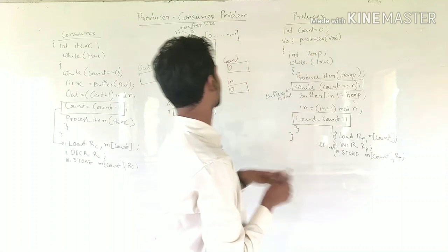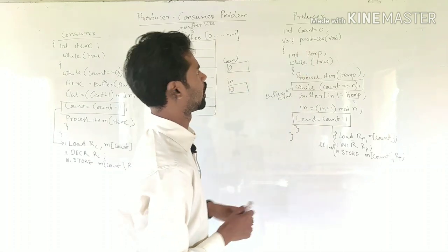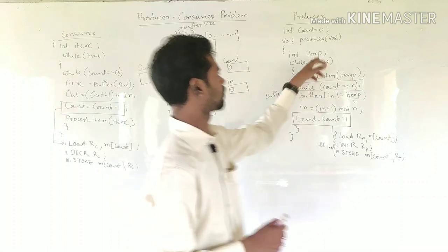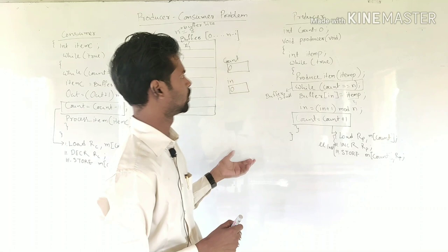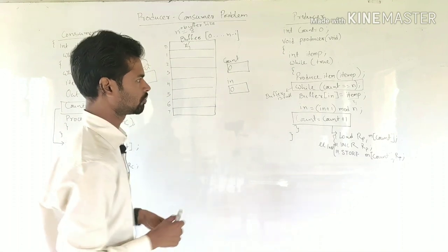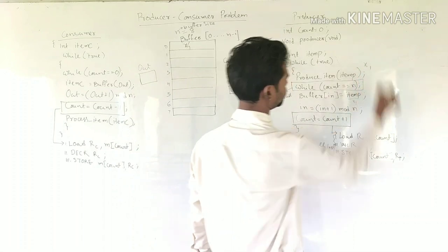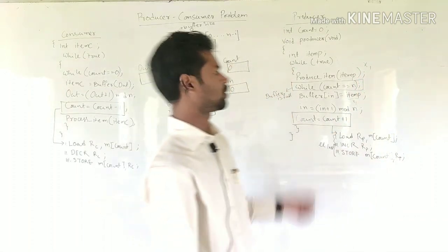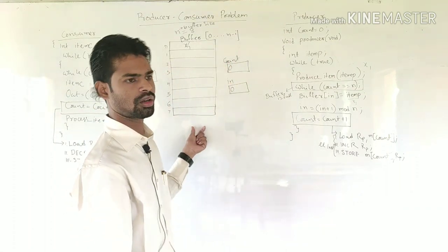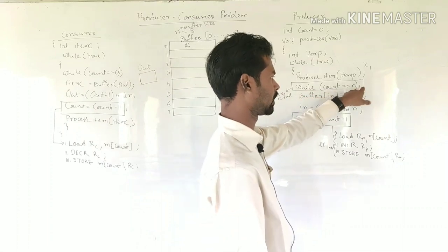In the producer code: count is initialized to 0, and we declare a variable item_p. Inside while(true), we produce an item — item_p, suppose that is x1. Then we check: while count == n — we are checking whether the buffer is full or not. If the buffer is full, this while loop will continuously execute as a self-loop.